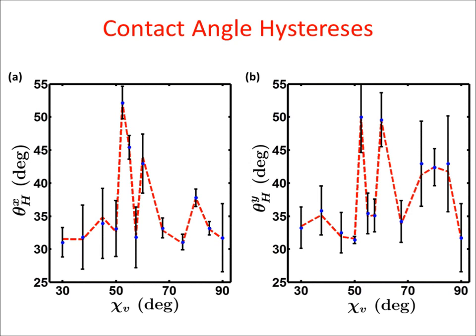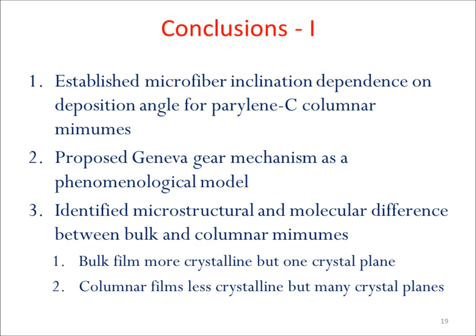The minimum, maximum, and mean values from three measurements each of the hysteresis in X and Y directions are shown here. We found that the sense of tilt about the X axis does not affect the hysteresis of columnar MIMUMs. Both contact angle hysteresis values show non-monotonic variations with chi-v. The mean values of hysteresis in X and Y were highest at 55 degrees, while both contact angle hysteresis values were around 20 degrees for the bulk film. Higher contact angle hysteresis suggests better adhesion of the droplet, which was evident during measurements in both XZ and YZ planes as the droplet always remained pinned to the columnar MIMUM. Pinning did not occur for the bulk film, whose surface was found to be smooth.